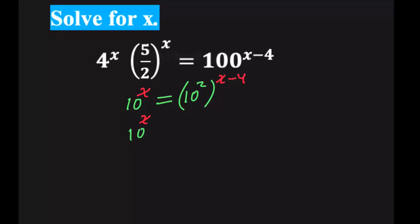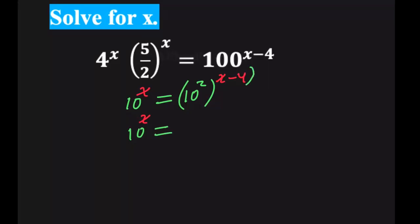And we have 10 to the x is equal. We're going to multiply the powers. So we're going to multiply this power and this power. And we have 10 to the power of 2x minus 8.